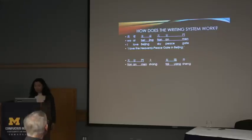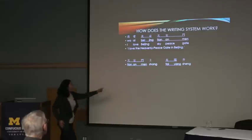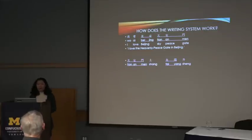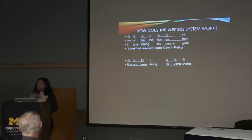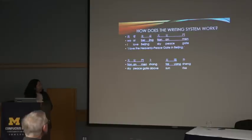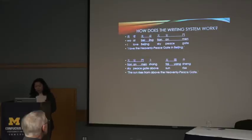The second sentence in that song is: Tiananmen shang tai yang sheng — seven characters, seven syllables. The second line shown is the phonetic system used in mainland China to transcribe sounds of characters. Its purpose is not for writing; it's for speakers of other Chinese dialects and foreign learners to learn standard pronunciation. It is not a writing system.